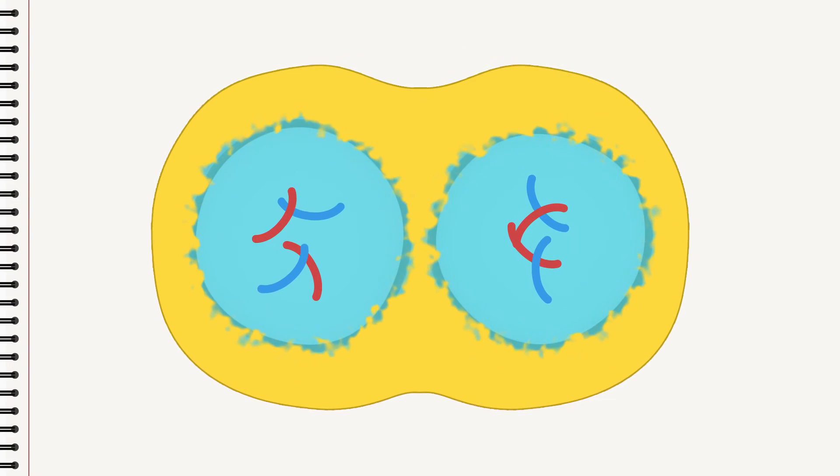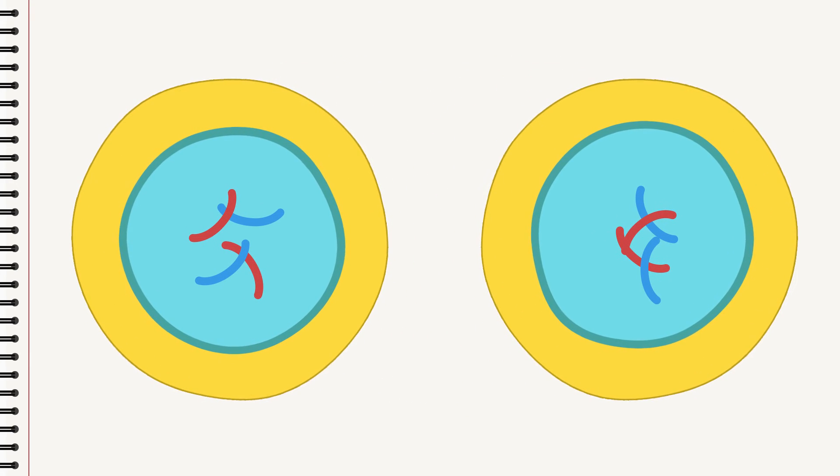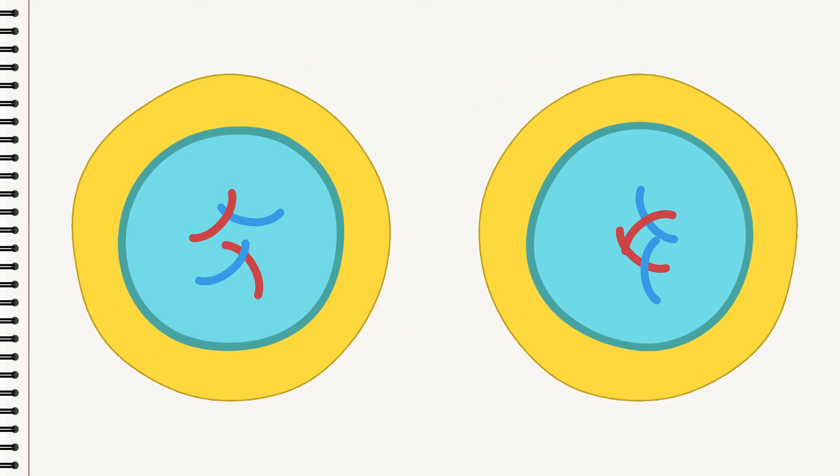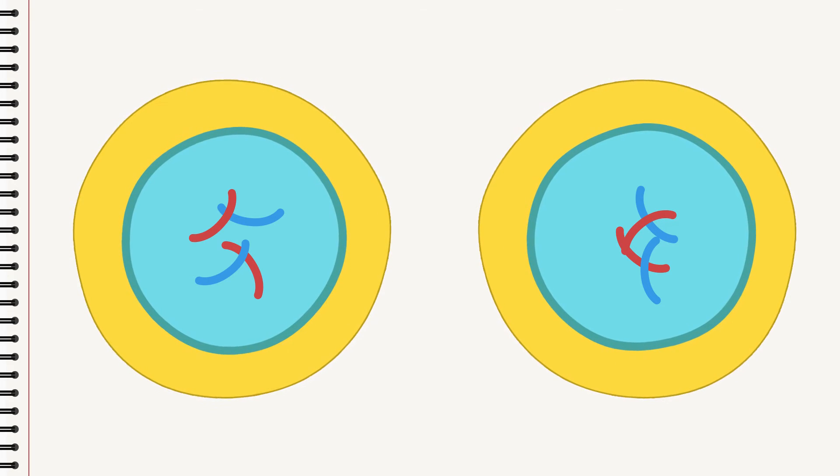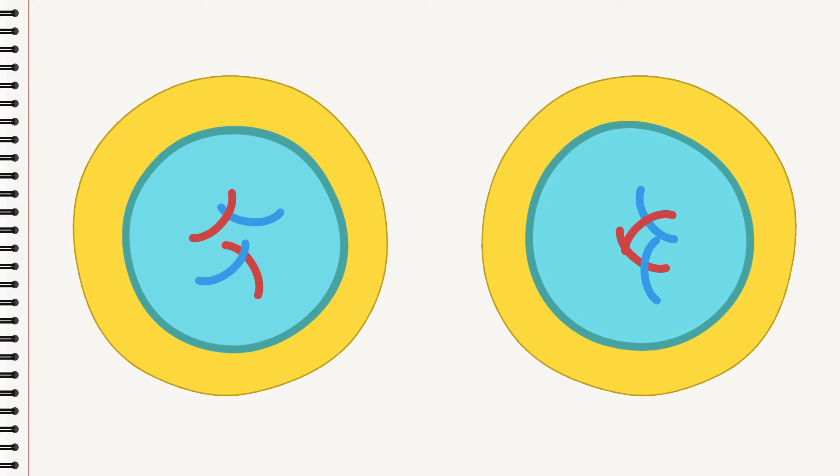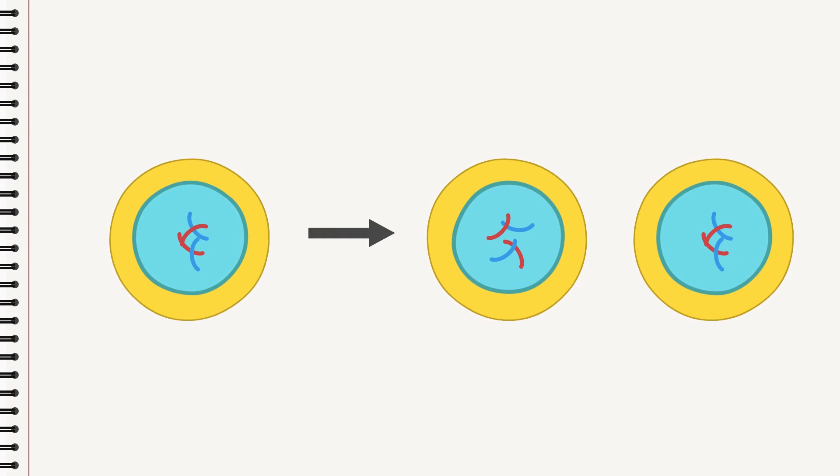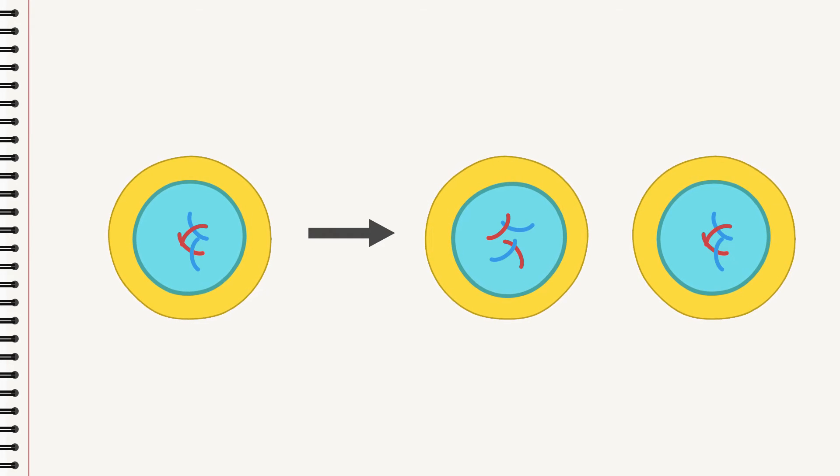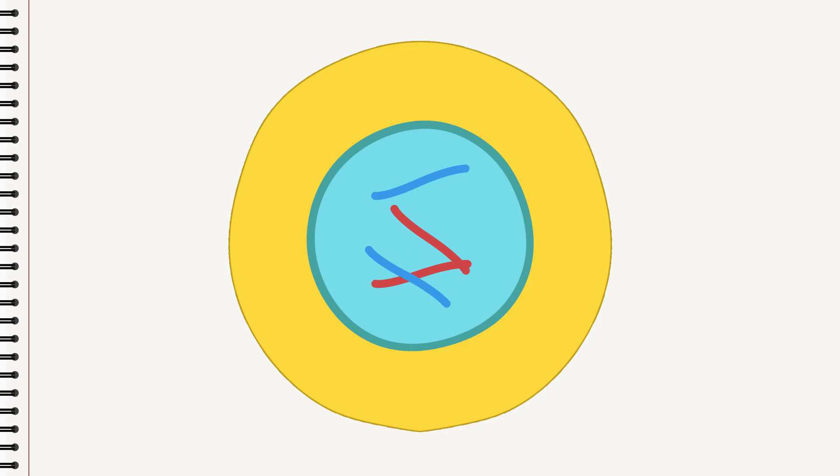are formed around the chromosomes, and the cell division is complete. From one parent cell, two daughter cells are created, both of which have exactly the same number of and identical chromosomes to the parent cell. This is an ordinary cell division. It's called mitosis. But there's another kind of cell division.